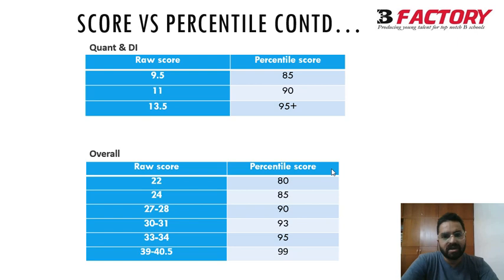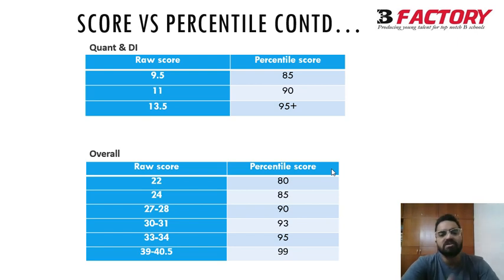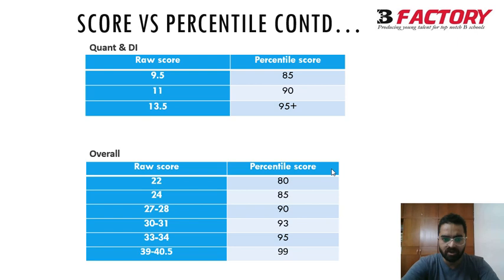For the QA section, 9.5 will give around 85th percentile and 11 will give around 90th percentile. However, since there is no sectional time limit, people can give disproportionate time to QA, so high scores are common. Sectional cutoffs are reasonably low to get a call from any good college, so don't worry too much about the sectional score.